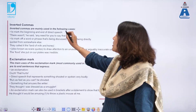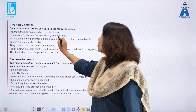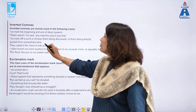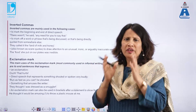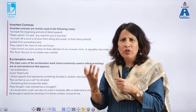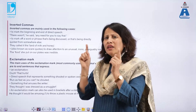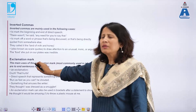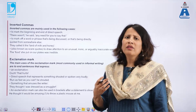Inverted commas are mainly used to mark the beginning and end of direct speech — for example: 'There wasn't,' he said, 'any need for you to say that.' They are also used to mark off a word or phrase being directly quoted from someone else. Whenever we give quotations verbatim from a text — whether a poem, novel, or story — we put that in inverted commas to show it has been taken directly from the source.